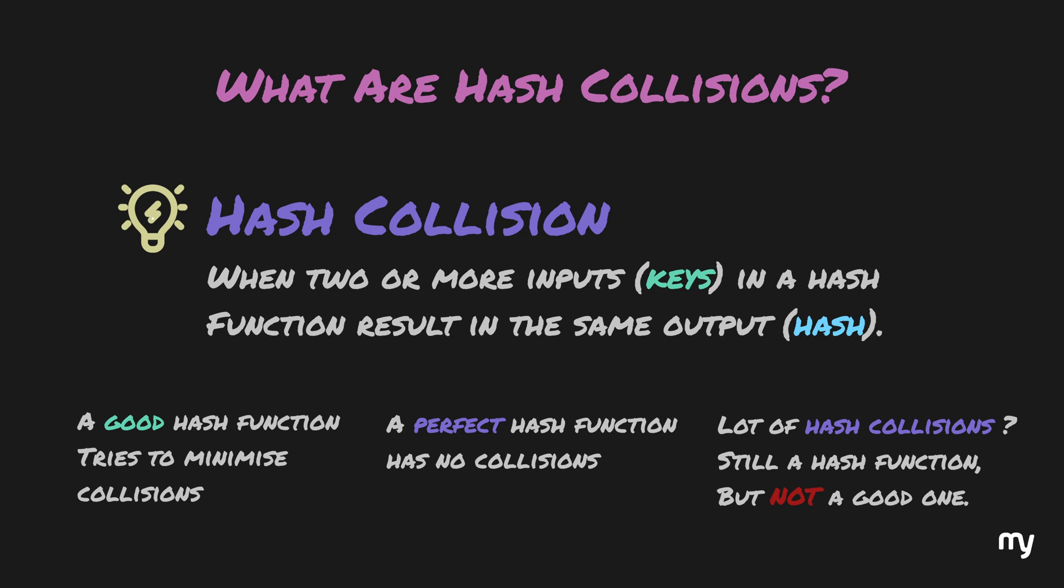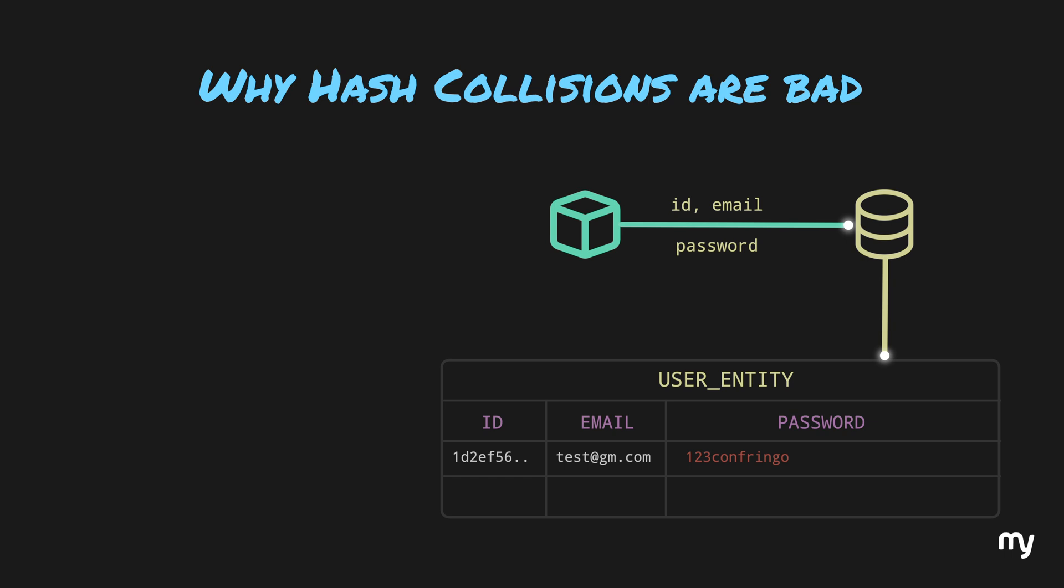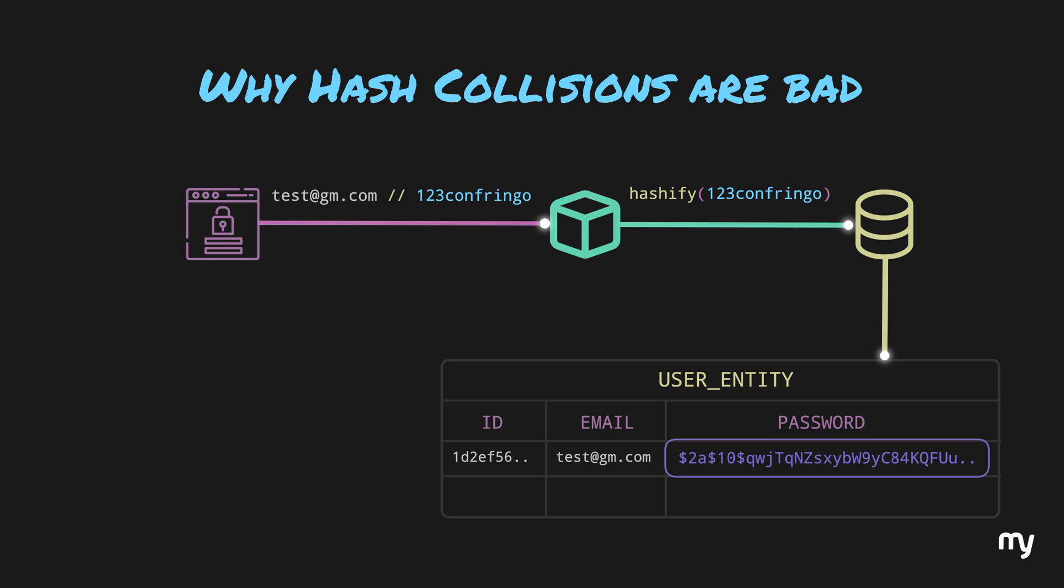Now, hash collisions can be detrimental in a lot of cases. Let's see how. If we take real-life example of passwords, companies don't store your passwords in clear text. They rather hash it, and then store it. So, with this hash, it is impossible for the developers to reverse engineer the actual password. So, when you login, the password is hashed again using the same hash function, which means it should return the same output as what was stored in the database. If they match, the login is successful.